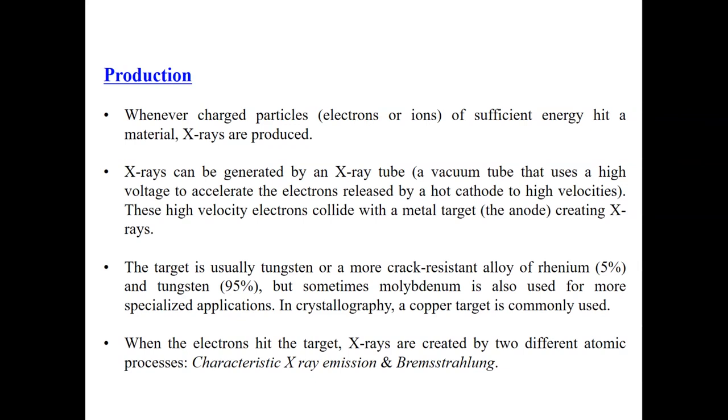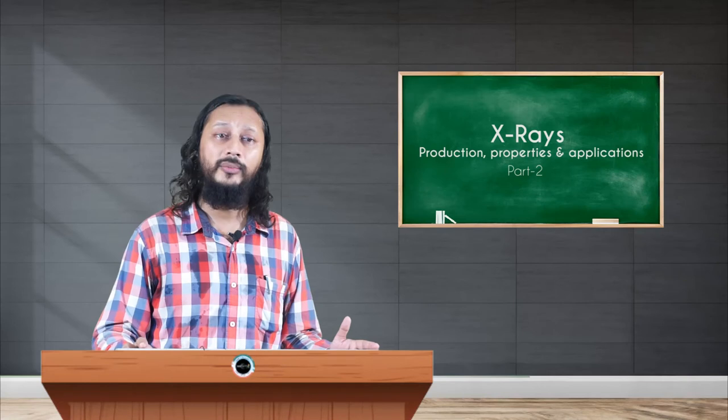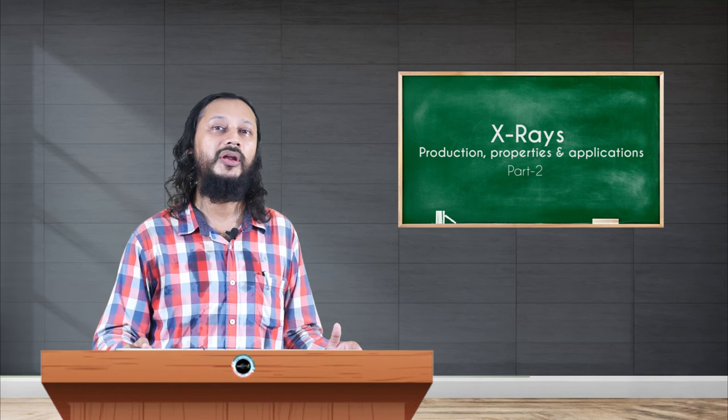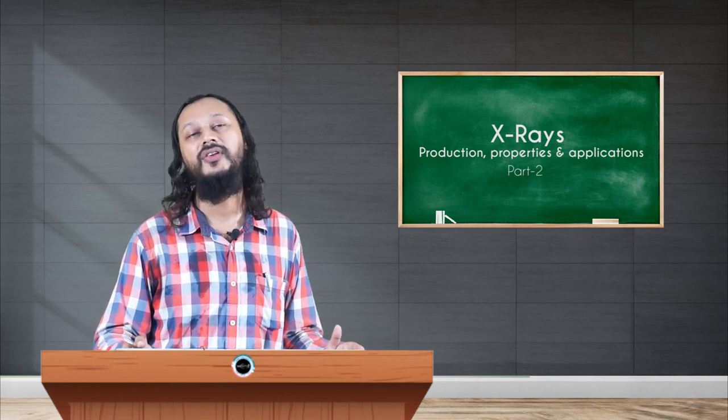X-rays can be generated by using a Crookes tube or a discharge vacuum tube, which has got a very high voltage to accelerate the electrons that are coming out as cathode rays. And when these high energy electrons, which are accelerated to very high degrees of potential, they collide with the target anode, that is when the X-rays are created. Usually the target is a high melting point, crack resistant material like tungsten. Sometimes also alloys like rhenium with 5% and tungsten of 95% are used. Molybdenum is also used. Usually copper is used for crystallography experiments as a target and so on, different materials with different requirements.